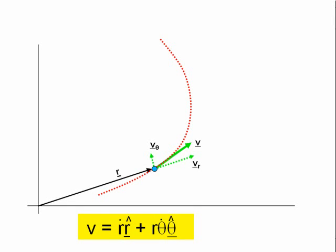We can write this as vr r-hat plus v-theta theta-hat, where vr and v-theta are the radial and tangential components of v. We will look at the velocity at two different times, treating the radial and tangential components separately.